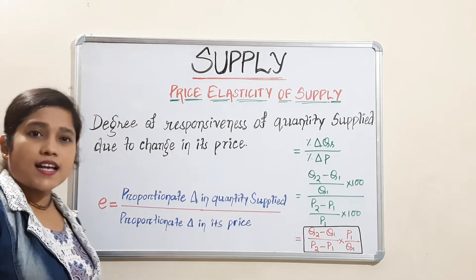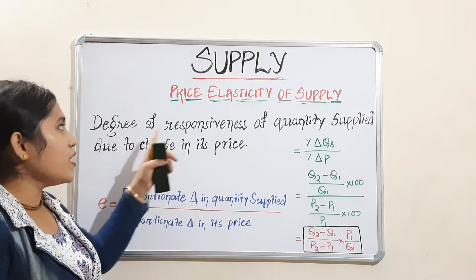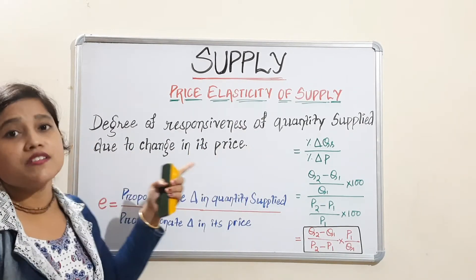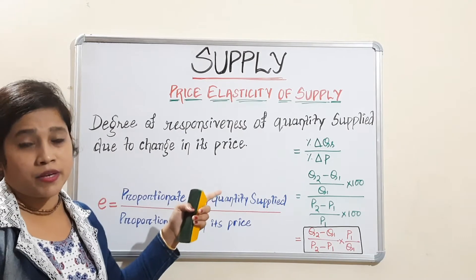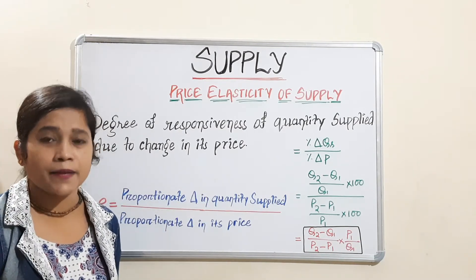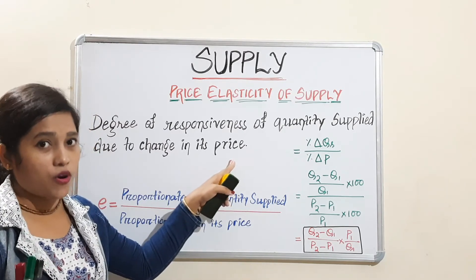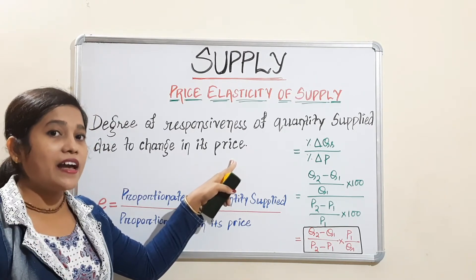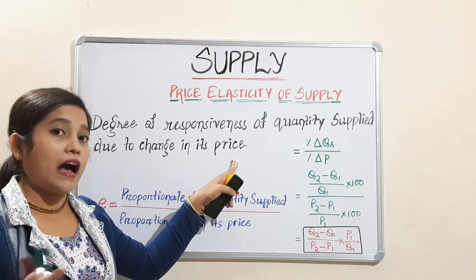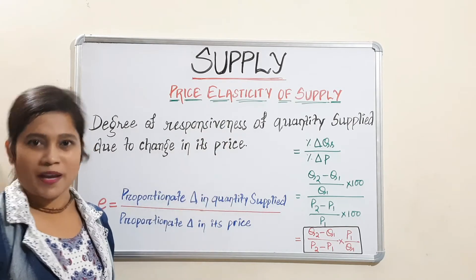So what does price elasticity of supply mean? Same as demand, it is the degree of responsiveness of quantity supplied due to a change in its price. That means when there is a change in the price of your commodity, how will your supply respond? That is price elasticity of supply.